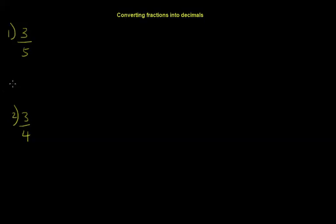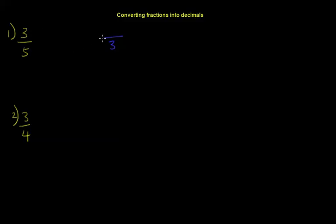All right, so in this video I'm going to show you how to convert fractions into decimals. So we have 3 over 5. The number 3, i.e. the number on top, the numerator, goes inside what we call a bus stop.